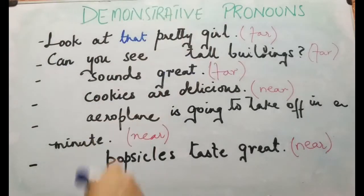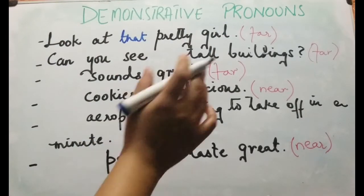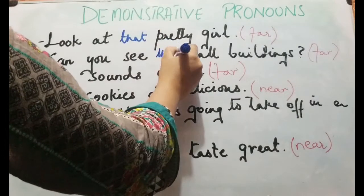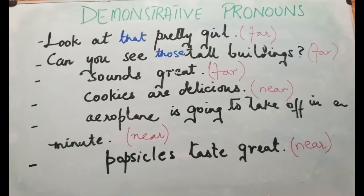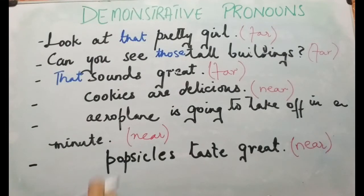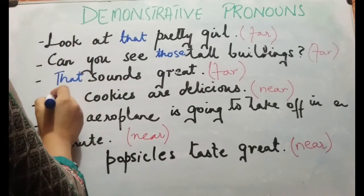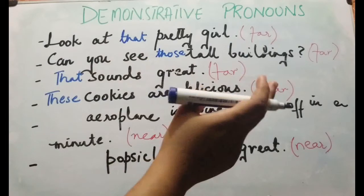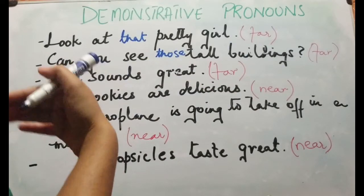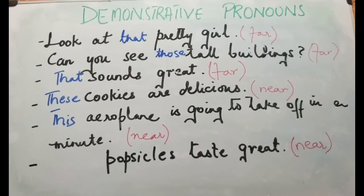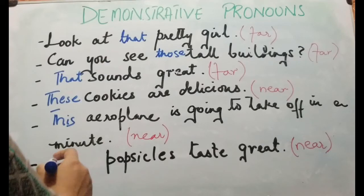Next: 'Can you see dash tall buildings?' This is plural and the buildings are far away, so of course 'those.' Next one is singular, so you place 'that.' 'Dash cookies are delicious' — the plate is right in front of you, so 'these cookies are delicious' since it's plural and near. 'Dash airplane is going to take off in a minute' — the airplane is right there, so 'this airplane,' singular and near. 'Dash popsicle tastes great' — it's there, so 'this popsicle tastes great.'